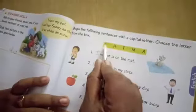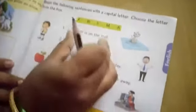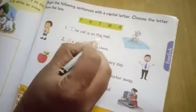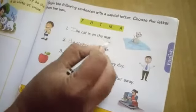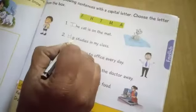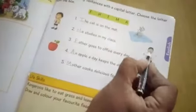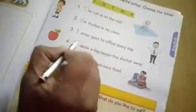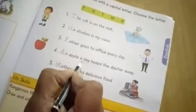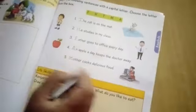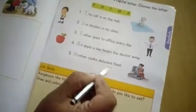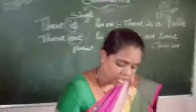See the exercise: begin the following sentences with a capital letter. Choose the letter from the box — F, H, T, M, A. First: dash — cat is on the mat. Choose T: 'The cat is on the mat.' Second: dash — studies in my class. Choose H: 'He studies in my class.' Third: Father goes to office every day. Fourth: An apple a day keeps the doctor away. Fifth: Mother cooks delicious food.